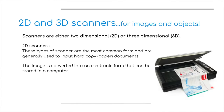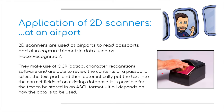We move on to 2D and 3D scanners. 2D scanners are the most common form, and they are generally used to input hardcopy or paper documents. The image is converted into an electronic form which can be stored in a computer. 2D scanners are used at the airport to read passports and also capture biometric data, such as face recognition. They make use of a system called OCR — optical character recognition.